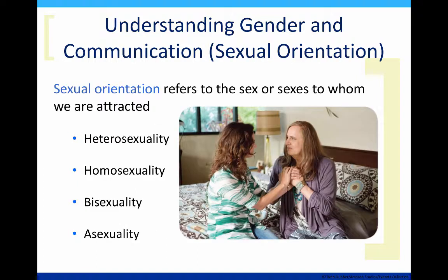Finally, sexual orientation is a major part of gender. This refers to the sex or sexes to whom we're attracted. Heterosexuality is the most common, and it means someone who's attracted to people of the opposite gender. Homosexuality refers to an attraction to others of their own gender. Bisexuality refers to an attraction to people of both sexes. And asexuality, which is rarely discussed in our culture, means someone who has little or no feelings of sexual attraction for other people.